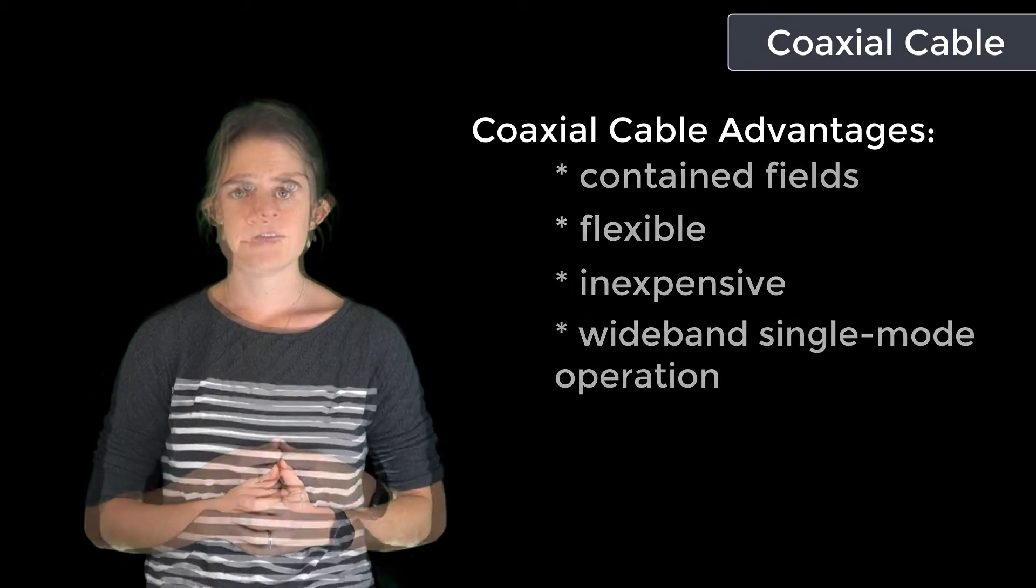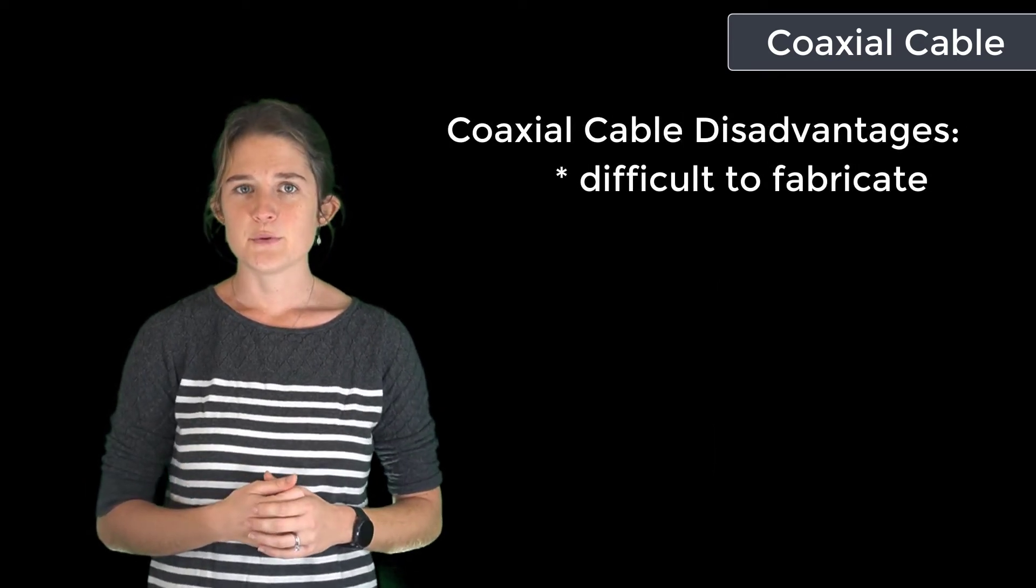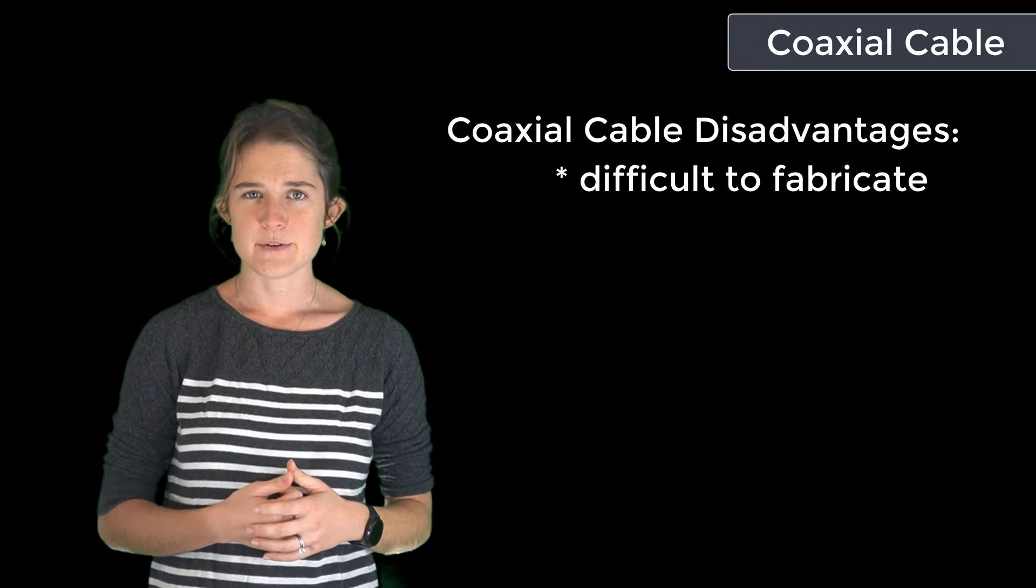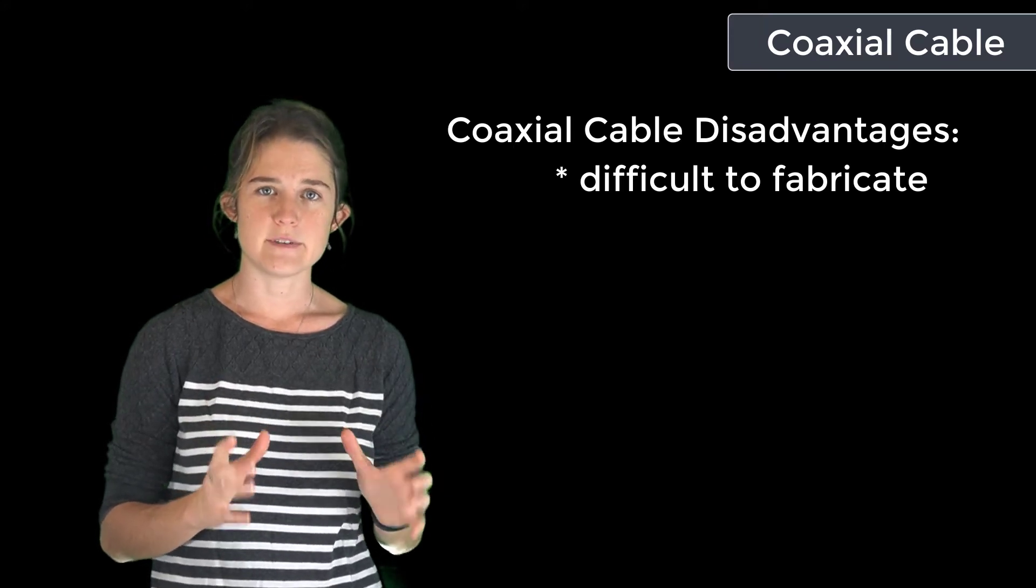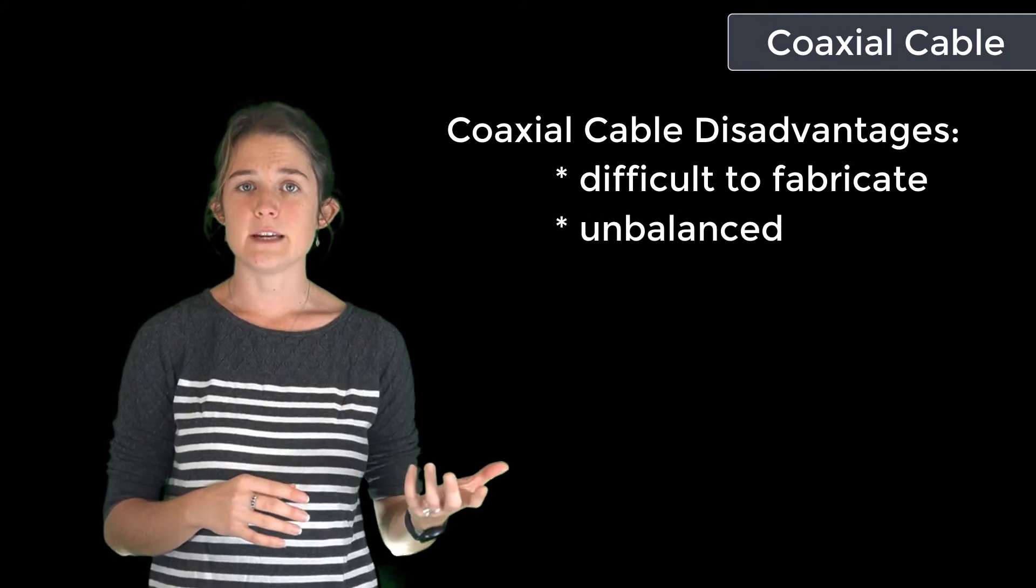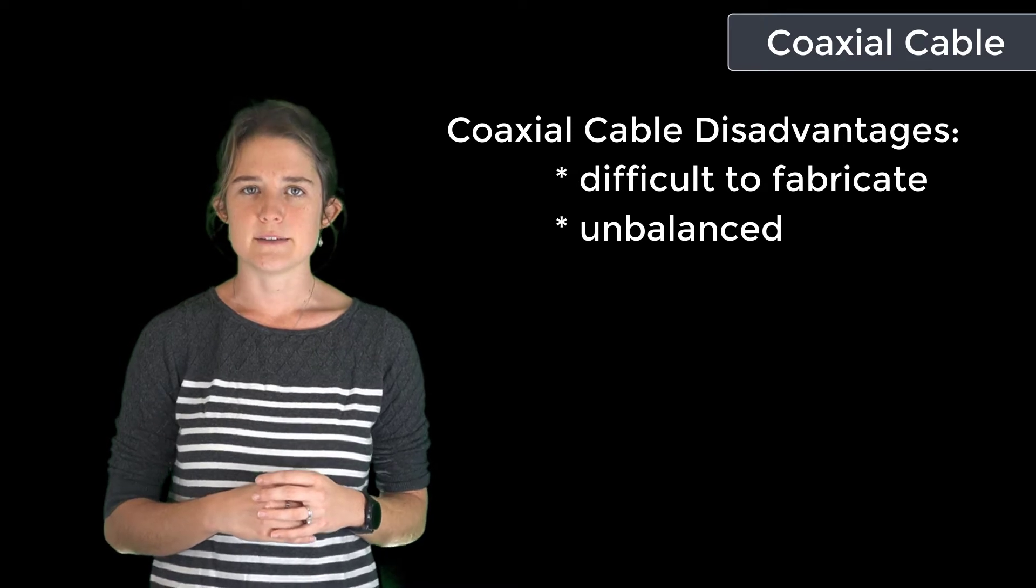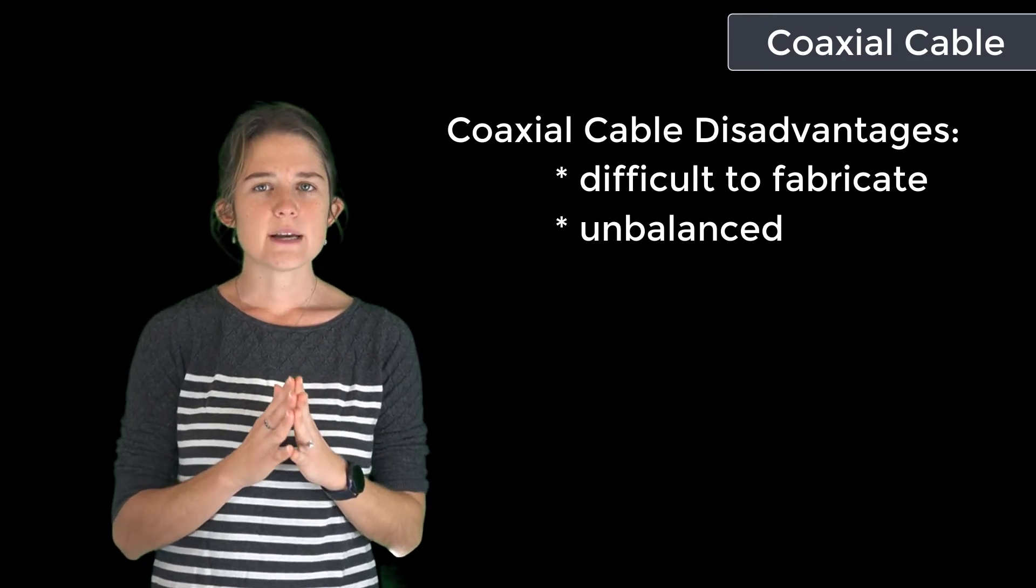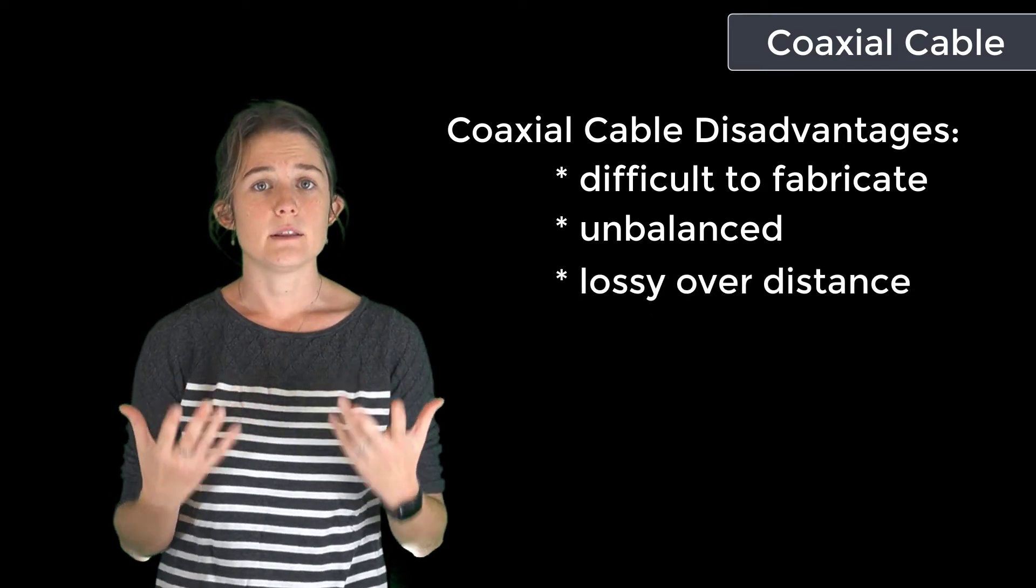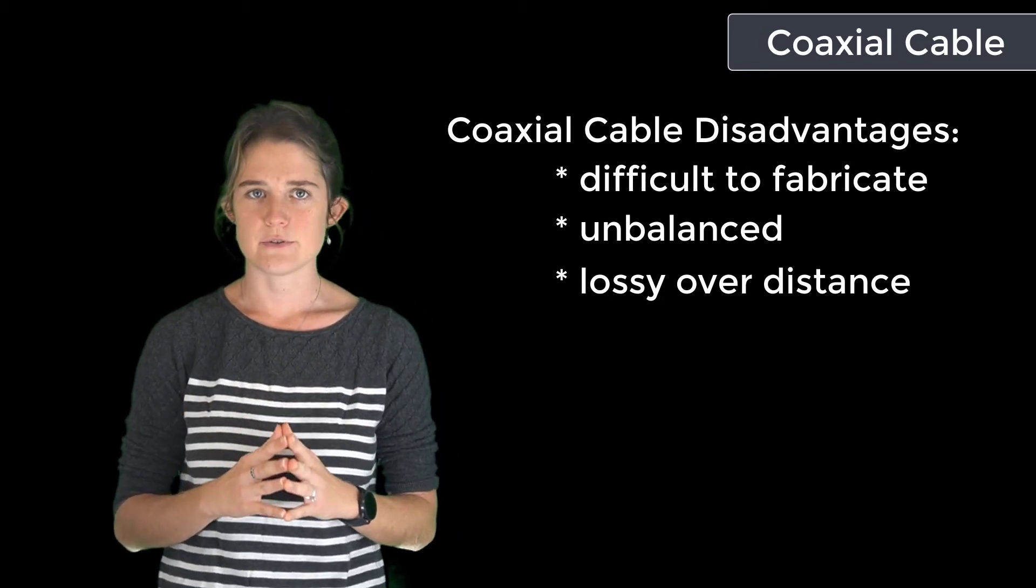On the other hand, coaxial cables are difficult to fabricate; you will usually need to buy them prefab, which means that you have a fixed number of designs to choose from. They are unbalanced, so if you are using one to feed a balanced load like an electric dipole, you will need to design a balun to compensate. Coaxial cables are also often quite lossy over long distances, so their use is constrained to close-range applications.